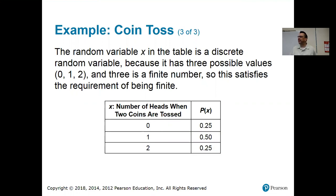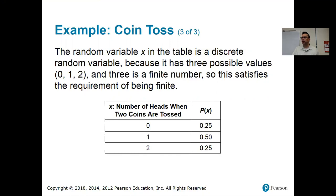The only time you really have to think harder about whether something is discrete or continuous is when there's an infinite possible number of values. An infinite number of possible values could still be discrete or continuous, depending on what the values look like. A good rule of thumb: if all the infinitely many values are whole numbers, it's still discrete. But if it's any real number between zero and ten, that would be continuous.